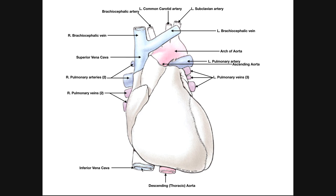Down here is the inferior vena cava, which also delivers blood back to the right atrium. The superior vena cava delivers blood returning from the head, neck, and arms — the superior structures. The inferior vena cava returns blood from anything below the diaphragm: the abdominal cavity, the diaphragm itself, and everything below.